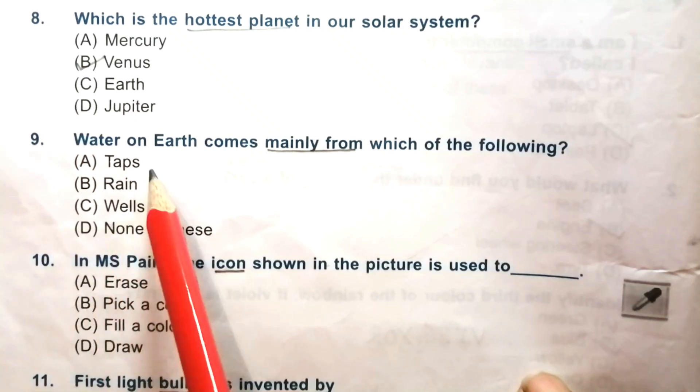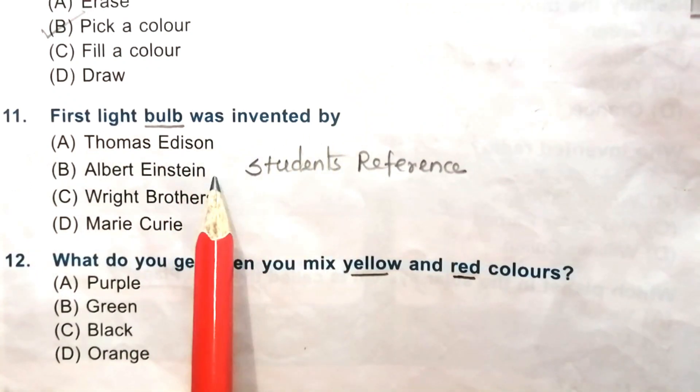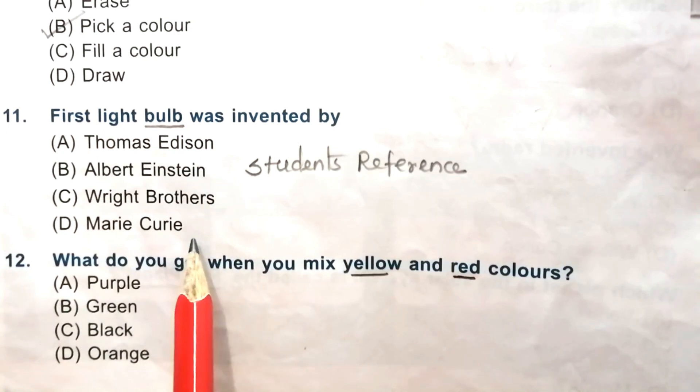Question 8: Which is the hottest planet in our solar system? Mercury, Venus, Jupiter, or Mercury. The answer is B, Venus. Question 9: Water on Earth comes mainly from which of the following? Taps, rain, wells, or none of these. The answer is B, rain. Question 10: In MS Paint, the icon shown in the picture is used to — pick a color, fill a color, or draw. The answer is B, pick a color.